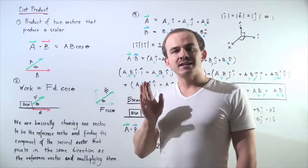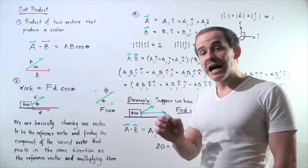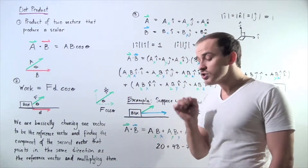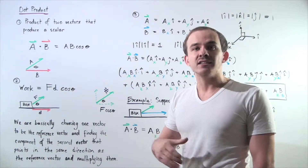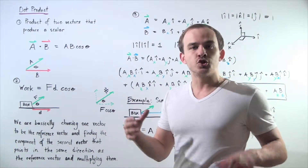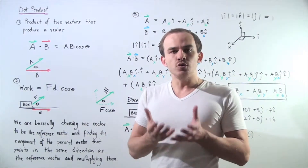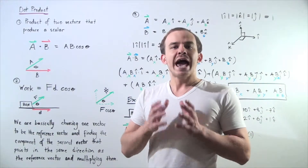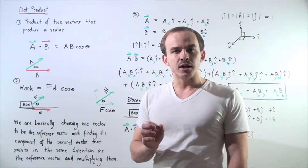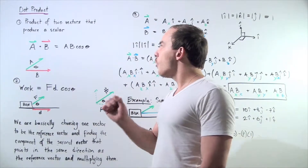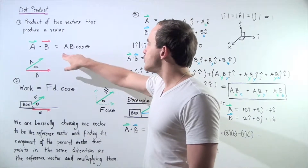So what exactly is a dot product? Dot product, also known as scalar product, allows us to multiply two vectors and produces a scalar. The formula for dot product is shown.